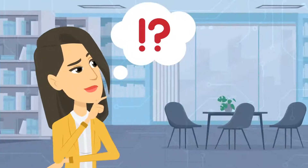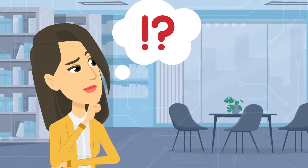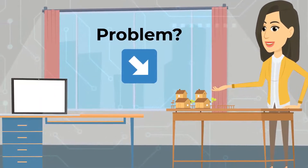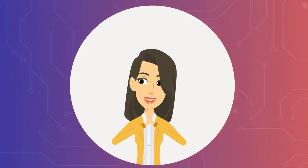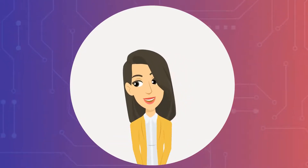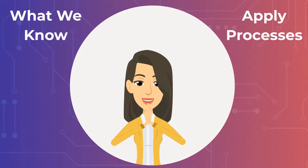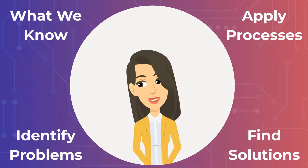Moving deeper and beyond computational thinking, computer science allows people to study and think about how computers and technology can be used to solve problems. Once you have an understanding of computational thinking, you can use those processes with technology to do some amazing problem solving and solution finding. Now that we know how computational thinking and computer science are related, we can take what we know, apply processes, identify problems, and find solutions with a solid support system.